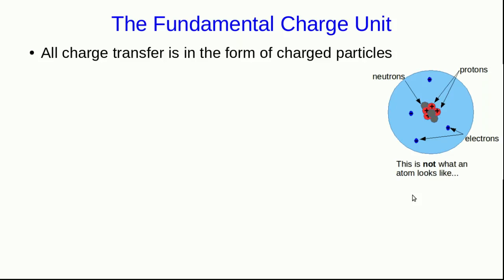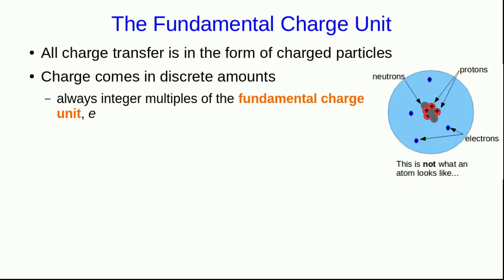It was once thought that charge might be a fluid that moves inside objects, but we now know that all charge is carried by charged particles. And so because of that, charge only comes in discrete amounts, because we can only transfer integer numbers of particles between objects. As a result, charge always comes in integer multiples of what is called the fundamental charge unit, E, which is just a particular positive amount of charge. The charge on a proton is positive E, plus 1E. The charge of an electron is negative E.